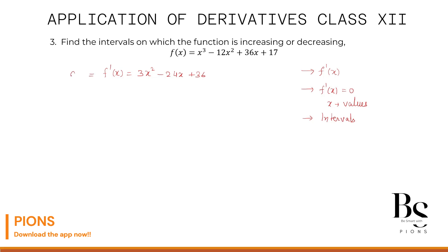The derivative of x³ is 3x², 12x² differentiates to 24x, and 36 stays as 36. Now put f'(x) = 0: 3x² - 24x + 36 = 0. Dividing the whole equation by 3 gives x² - 8x + 12 = 0. Because 0/3 = 0, 3/3 = 1, 24/3 = 8, and 36/3 = 12.